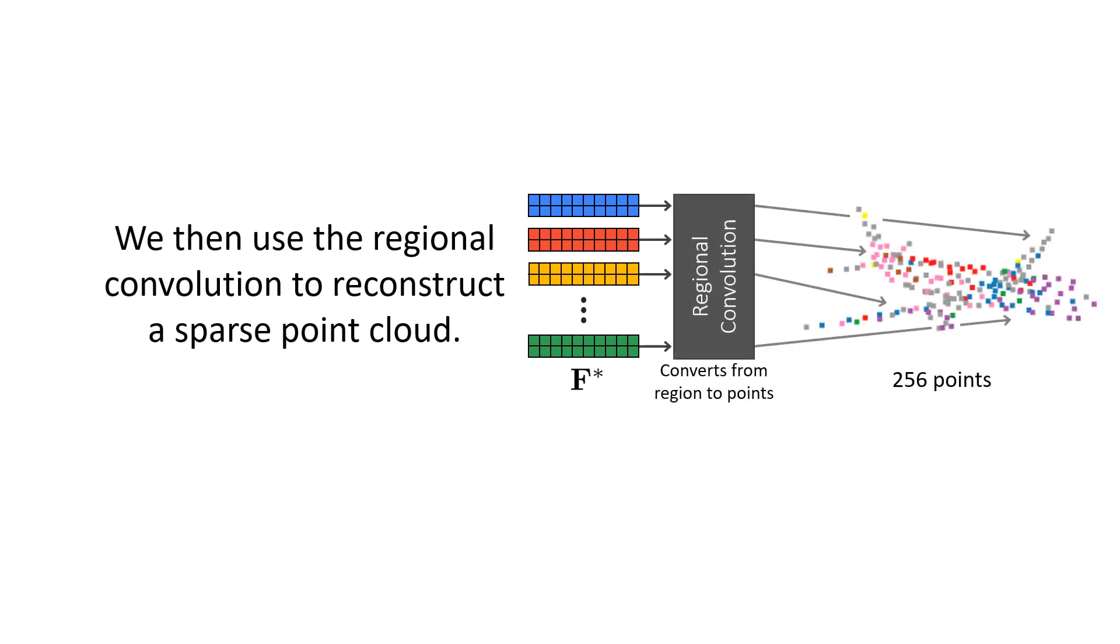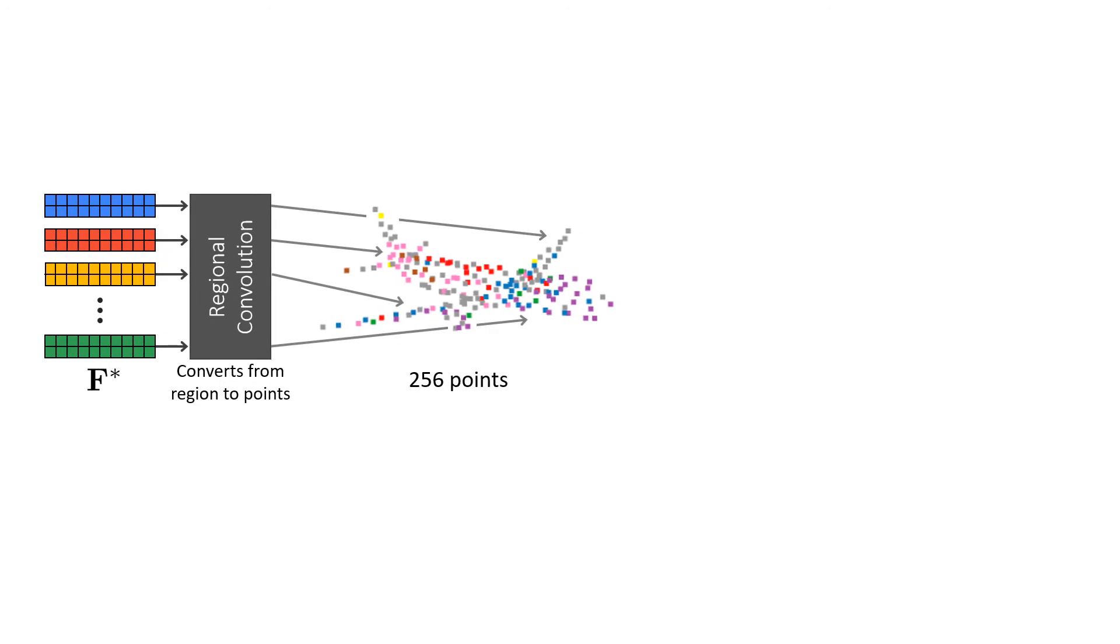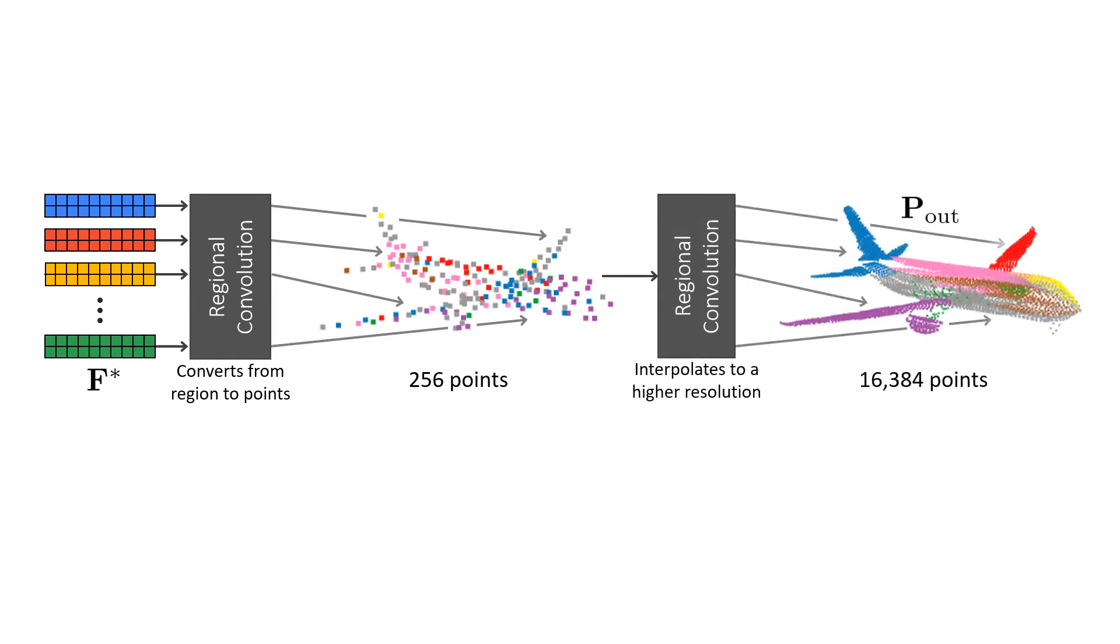Therefore, we use the regional convolutions to reconstruct a sparse point cloud. When the first regional convolution produces 256 points, the second interpolates to higher resolution with 16,384.